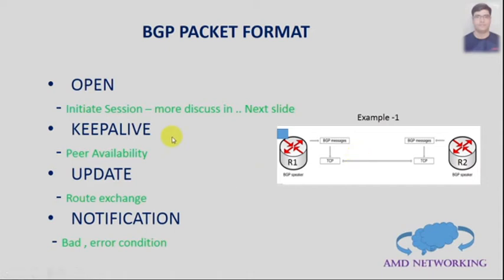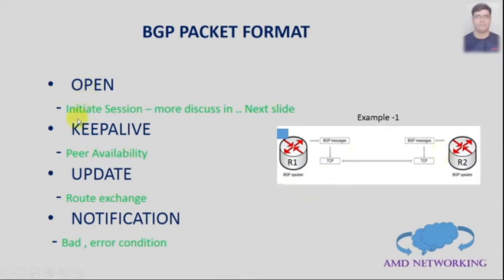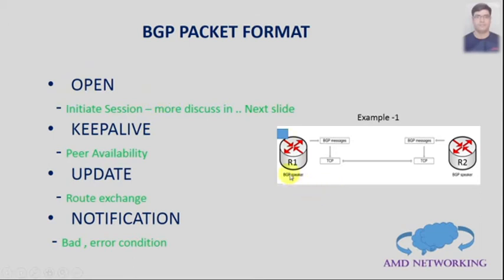I will show you with the help of this example what different message packets contain and how they share information. Router 1 first establishes a TCP connection with Router 2, and after that it sends the Open message to start peering with Router 2. Router 2 then sends back an Open message to Router 1, and after that it sends a Keepalive message to Router 2, which sends back a Keepalive message in return.